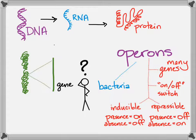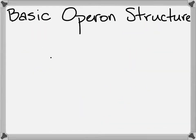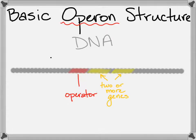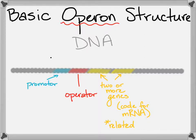When looking at operons in general, basic operon structure is this. Looking at your length of DNA, there's going to be an operator — that's where the name operon comes from. Downstream of that operator there are two or more genes, all related in some way because you want to turn them on or off at the same time. And upstream of that DNA is the promoter, which is where the RNA polymerase binds. The operator sits between where the RNA polymerase would start and where the genes actually are.